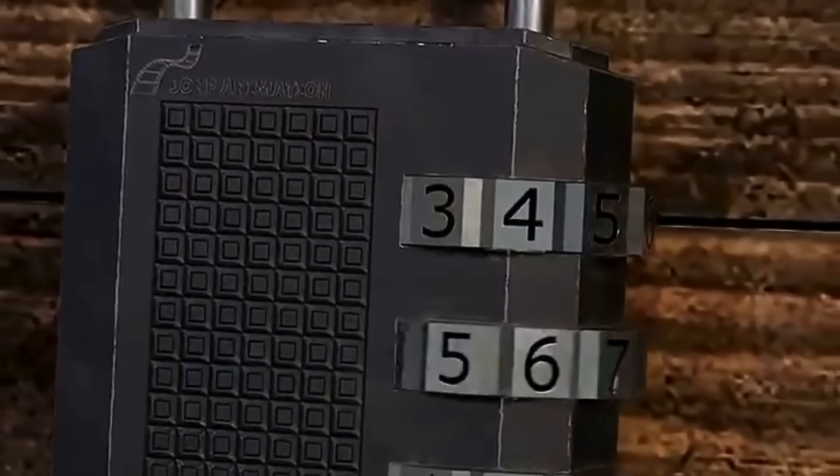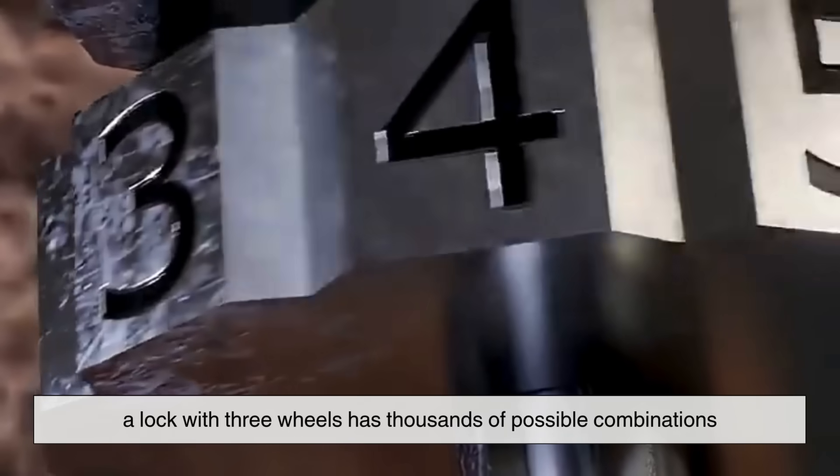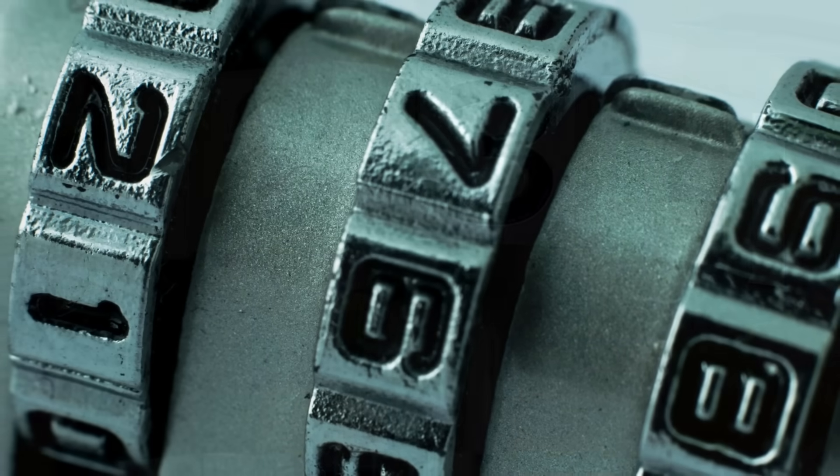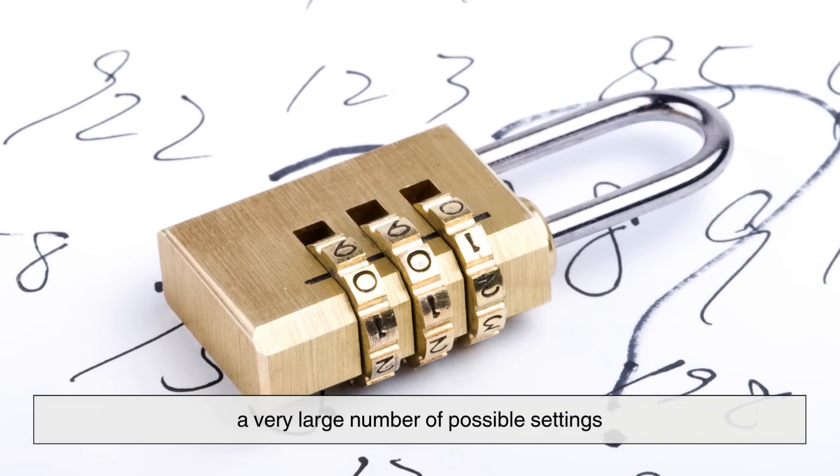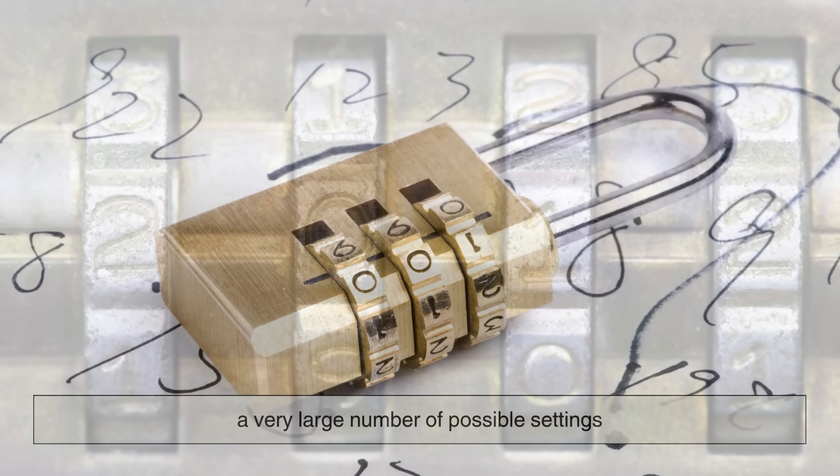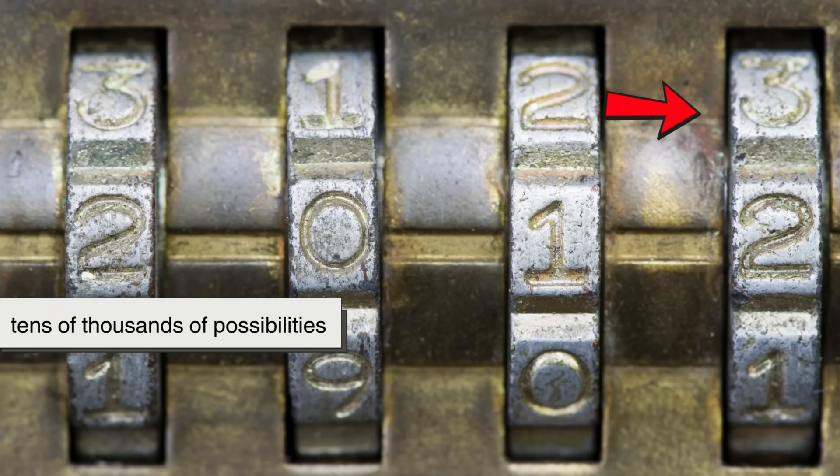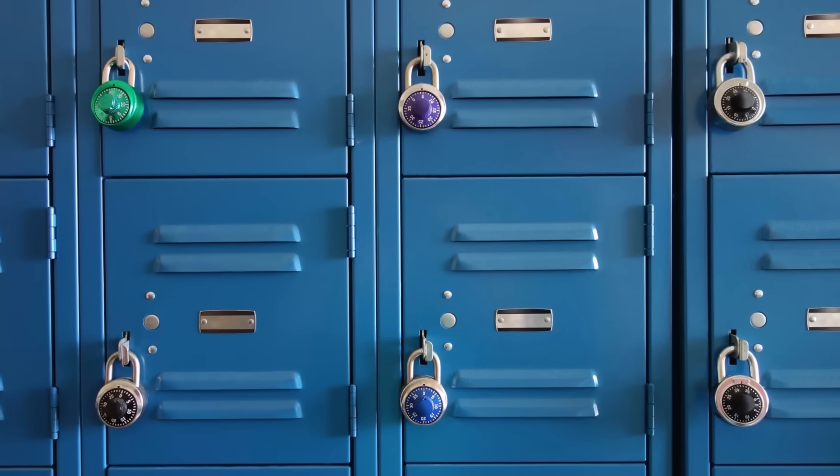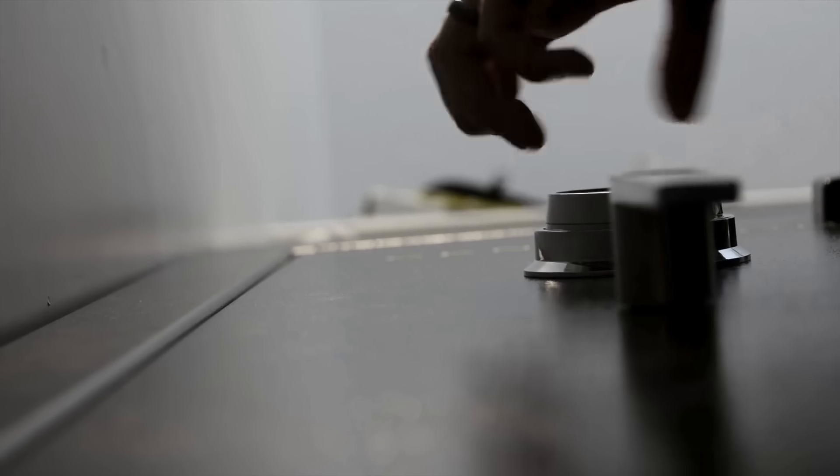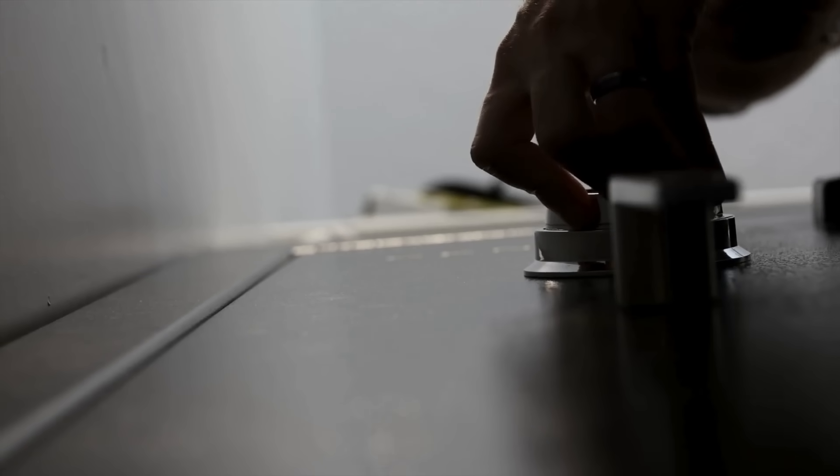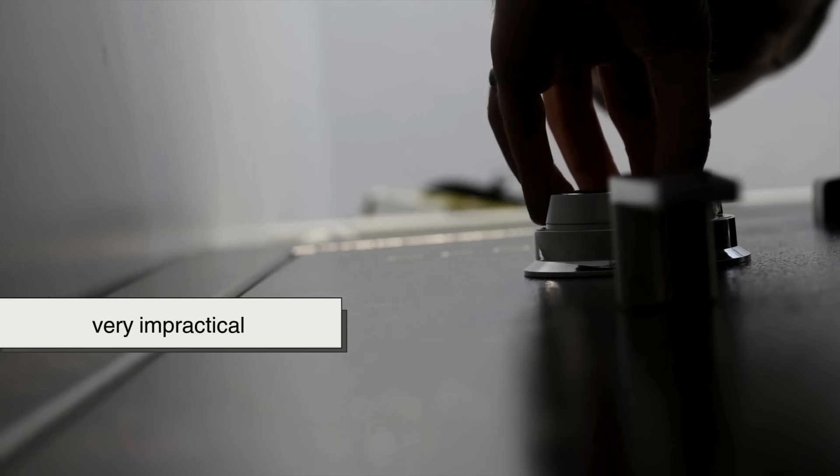This careful sequencing also explains why a lock with three wheels has thousands of possible combinations. Each wheel has ten digits, and those multiply together into a very large number of possible settings. Add a fourth wheel, and suddenly you're dealing with tens of thousands of possibilities. That's what gives these locks their effectiveness. Even though the actual mechanism inside is simple, the number of possible outcomes makes guessing the correct code by brute force very impractical.